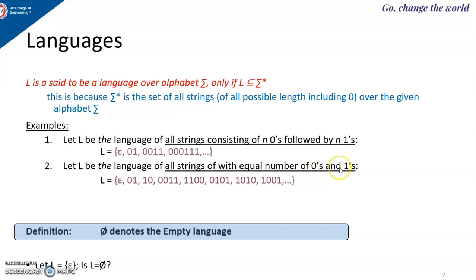Similarly, I can define another language: L is the set of all strings with equal number of zeros and ones. The zeros and ones can appear in any form, but the number of zeros must equal the number of ones. When n equals 0, the string is epsilon. When n equals 1, I get one zero and one one.